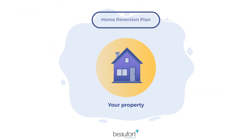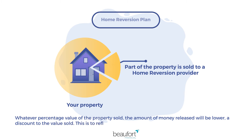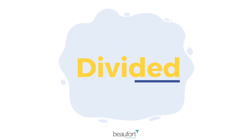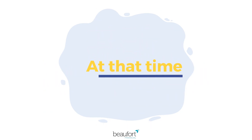The other equity release product available to you is a Home Reversion Plan. Put simply, a Home Reversion Plan is a means of selling a share or all of your home at a discounted value in exchange for a Lifetime Tenancy, which is rent-free. In selling that part of your property to a Home Reversion Provider, you release equity from the value of the part you sell. The tenancy will guarantee your right to remain in the property until death or having to go into long-term care. Then the property is sold, and the proceeds of the sale are divided between your estate and the Home Reversion Plan provider, who will receive the value of their share based on the sale price of your property at that time.